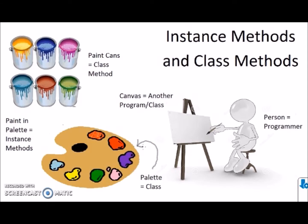Here we have an artist with a canvas, a paint palette, and paint cans. We can call the paint palette the class of the program and the paint in the palette the instance methods. These individual paints have been chosen and are specific to the palette, exactly how instance methods are specific to the class and the instances of the class.